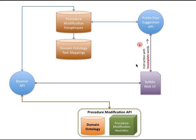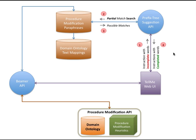First, as the user types, the instruction with incomplete words is sent to the prefix-tree-based Suggestion API. This partial match search is based on multiple prefix trees for each kind of paraphrase, which allows near-instantaneous search as the user types. We get back possible matches, which results in instructions with completed words being shown to the user.